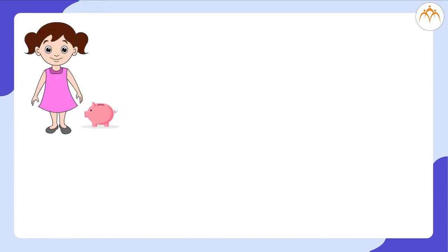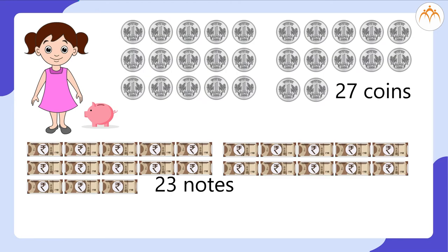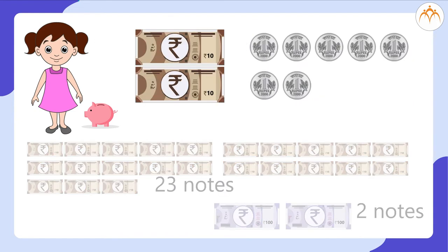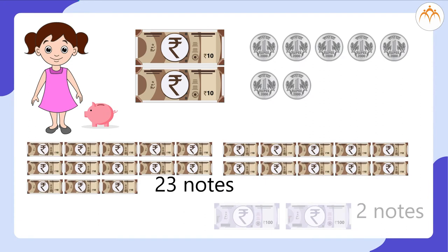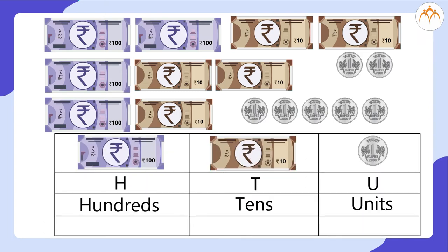From the second piggy bank, she removed 27 coins of 1 rupee, 23 notes of 10 rupees, and 2 notes of 100 rupees. To make it convenient, Meena exchanged coins of 1 rupee with notes of 10 rupees and notes of 10 rupees with notes of 100 rupees each. That means hundreds: 4, tens: 5, units: 7.